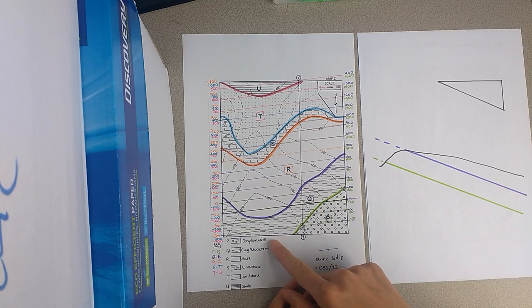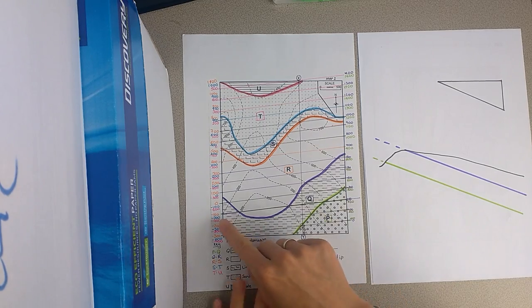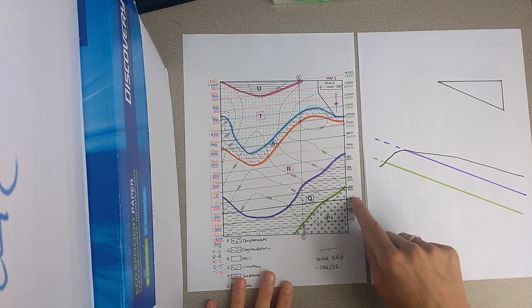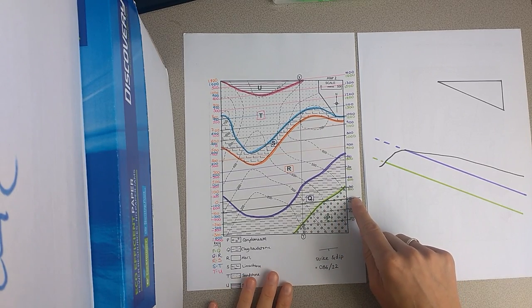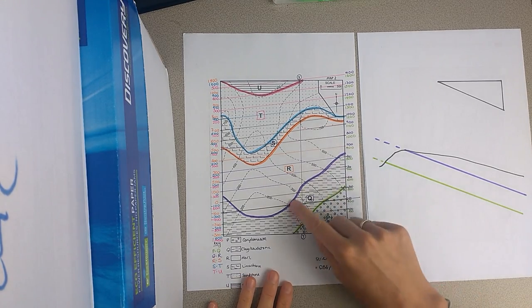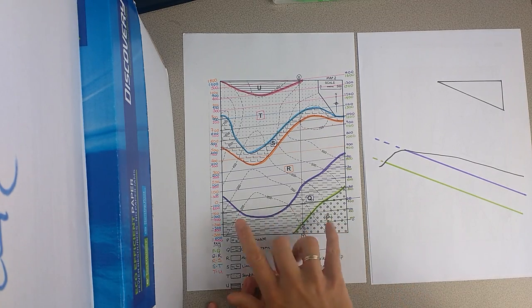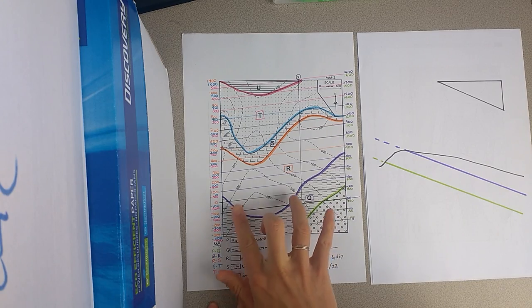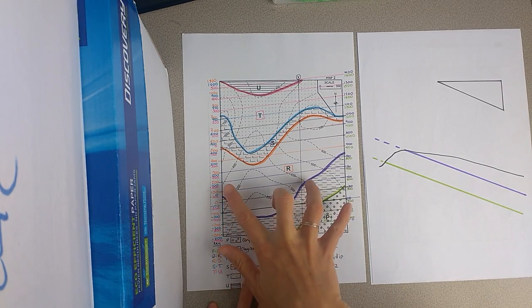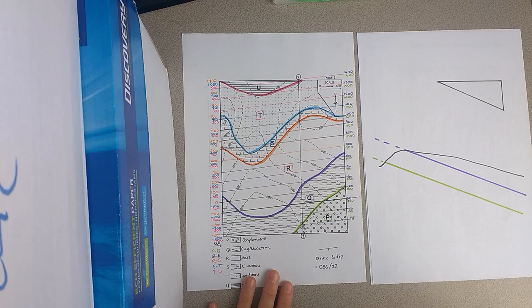So if we want to work out the dip for these units, first of all we're going to draw the structure contours, which are the planes of equal elevation for these surfaces. So remember we joined up the points of equal elevation for this purple line: 200, 300, 400, 500, 600 metres.